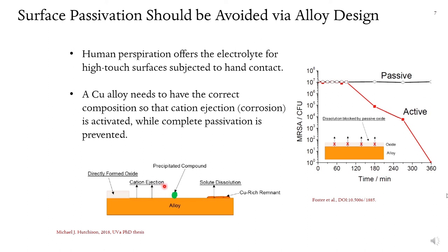Alloying elements such as aluminum, when they are added to copper, tend to promote the formation of an oxide layer, the so-called passive layer on the surface. When the passive layer is there, the active ejection of copper ions is prevented. And that is very bad for the antimicrobial functionality.